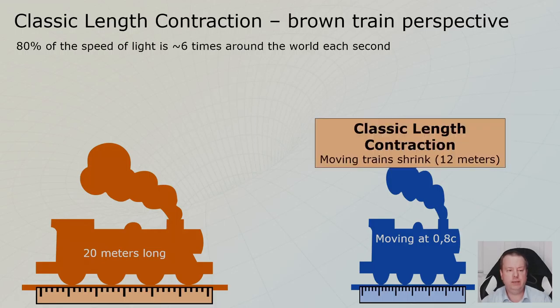This is the animation. The train will have shrunk, it became a little bit shorter, right? 12 meters, not 20 meters. And this is what we will call classic length contraction.